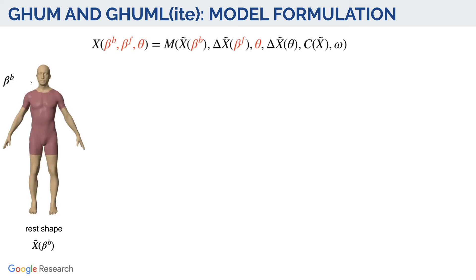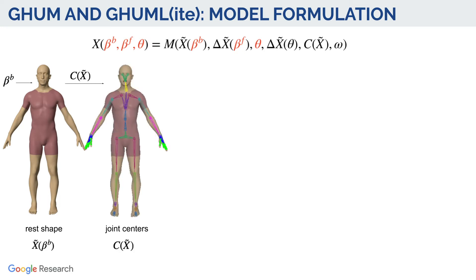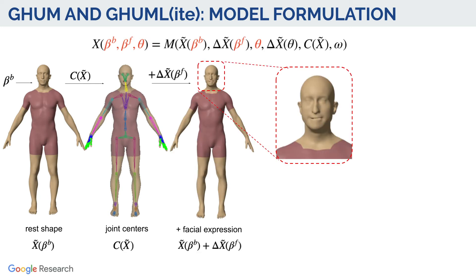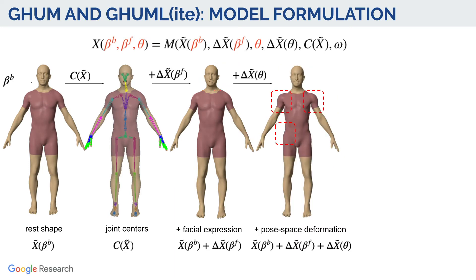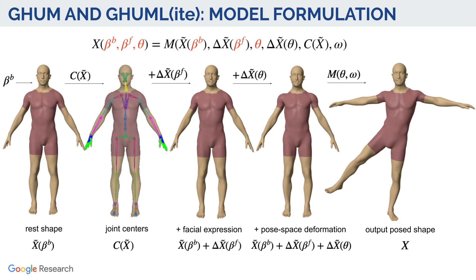Our body shape representation BdB is first decoded to produce an A-pose body shape. In addition, the body joint centers parameterized as a function of the shape are adjusted accordingly. We also support facial expressions represented as BdF, localized in the head region. To model soft tissue deformation and eliminate skinning artifacts, our generative skinning process also includes pose-dependent correctives from the rest shape. Lastly, we skin the mesh into the pose.